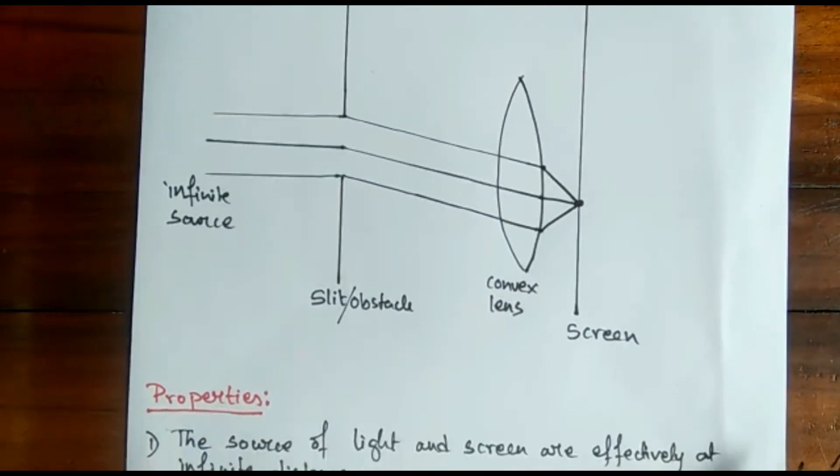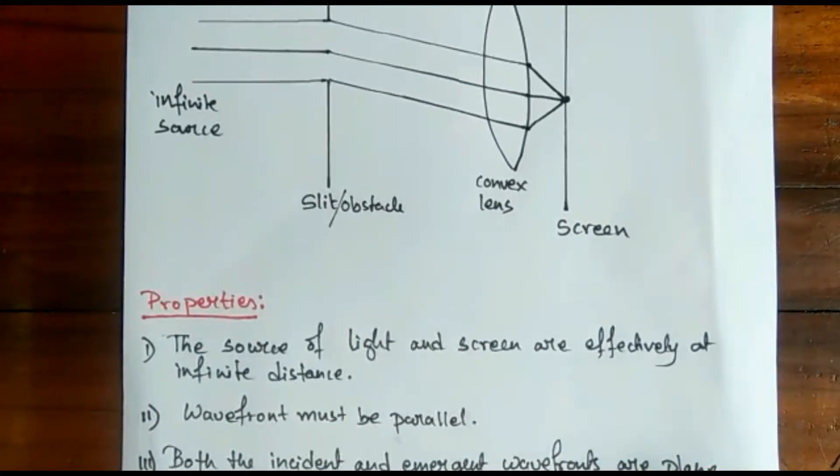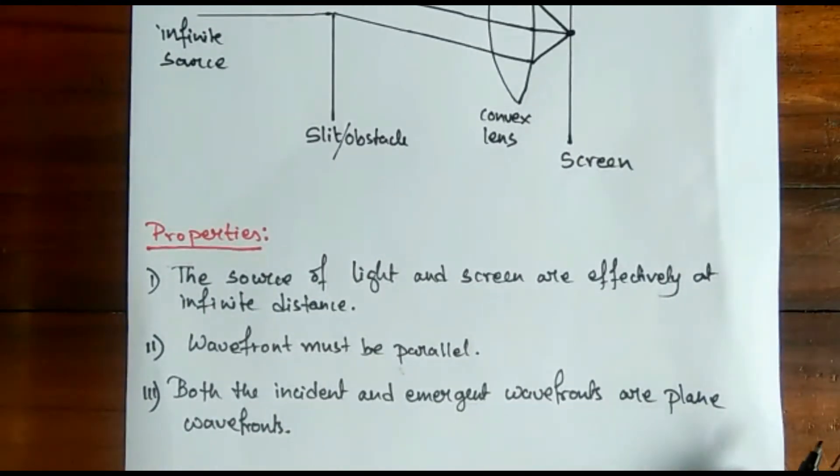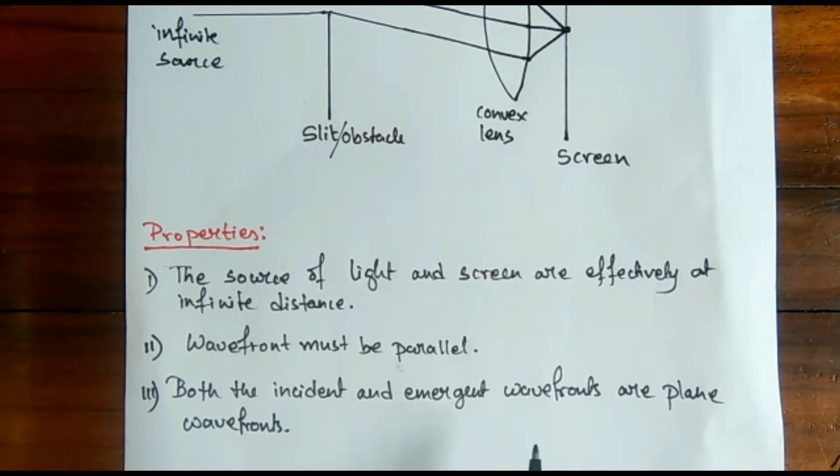Now for Fraunhofer diffraction to occur, there are some properties or you may say conditions. What is this? The first one is the source of light and screen are effectively at infinite distance.